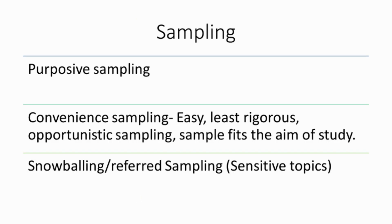There are different types of sampling as well. You've got purposive sampling and convenience sampling, which is one of the easiest and least rigorous types of sampling.